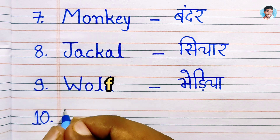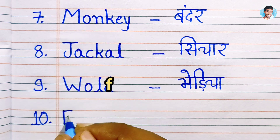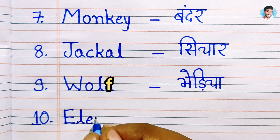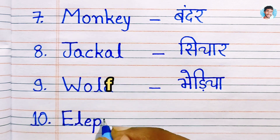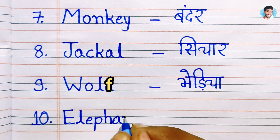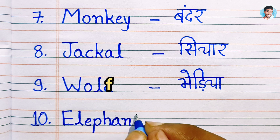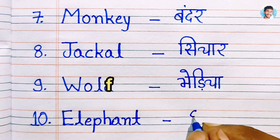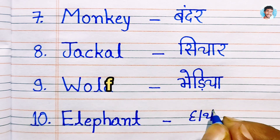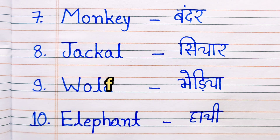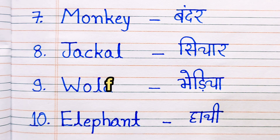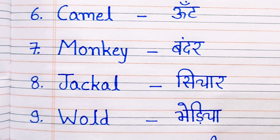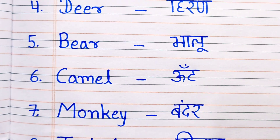Number 10: Elephant. E.L.E.P.H.A.N.T. Elephant means haathi. So these are the 10 wild animal names in Hindi and English.